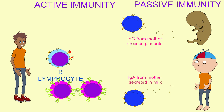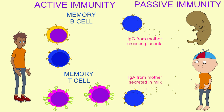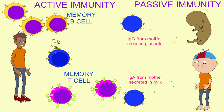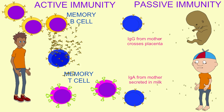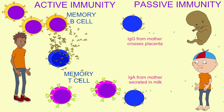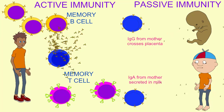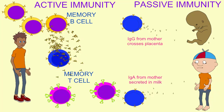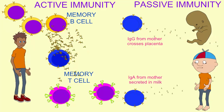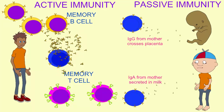Both of these are examples of passive immunity. In active immunity, one's own body responds to an antigen and generates memory cells so that subsequent responses will be more efficient. In passive immunity,